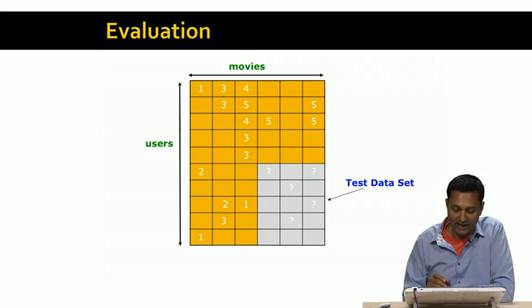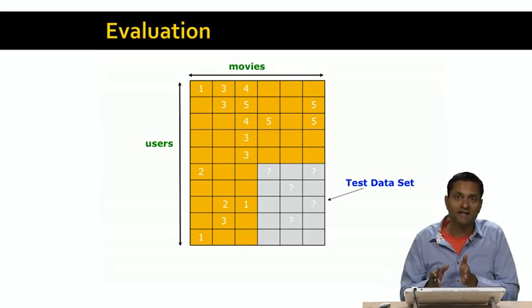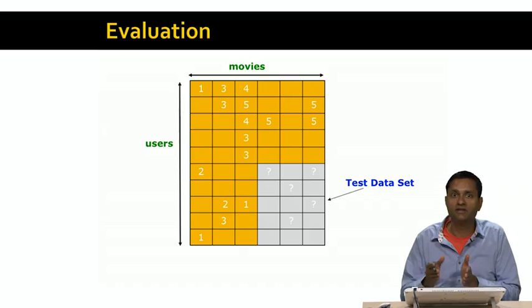For the purposes of the algorithm, these are going to be treated the same as unknown ratings, or the blank ratings. But in fact, we know what these ratings are. So we can use our algorithm to predict these ratings, and then compare them against the actual ratings, and see how good the algorithm performed.